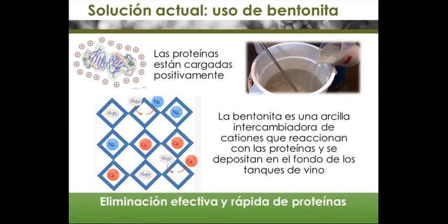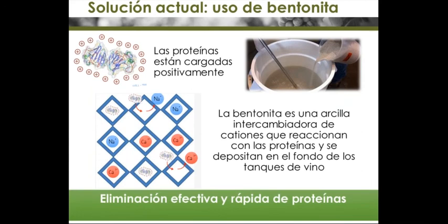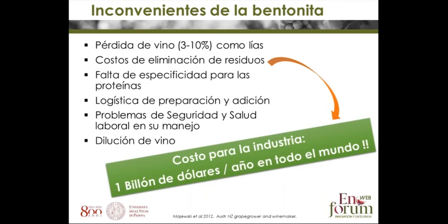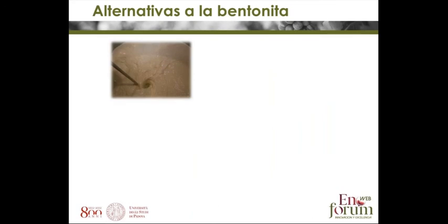Of course bentonite works very well — that's why it's been around for so long and is very quick. But many groups are looking for alternatives, which means bentonite is not perfect. It produces lees which can be up to 10 percent of wine volume, so wine is lost. There is elimination of other compounds like aroma compounds, it costs to dispose of since bentonite is not reusable, it is not specific for wine proteins, it costs to prepare, there are health and safety issues, and you introduce water which dilutes the wine slightly. It has been calculated that the cost for the wine industry worldwide is one billion dollars. So there is a lot of argument to replace it.